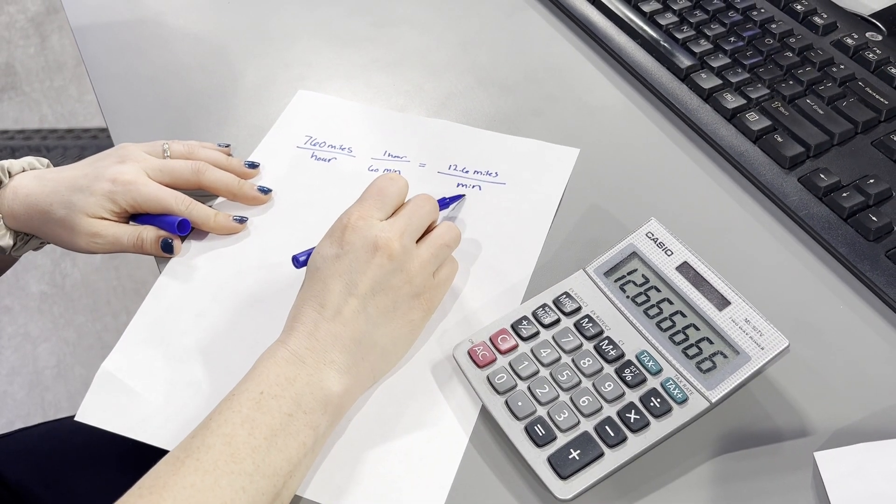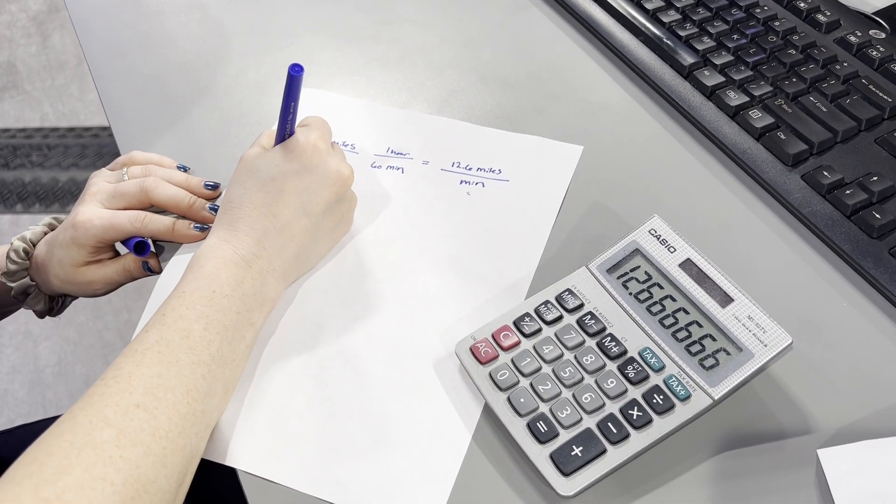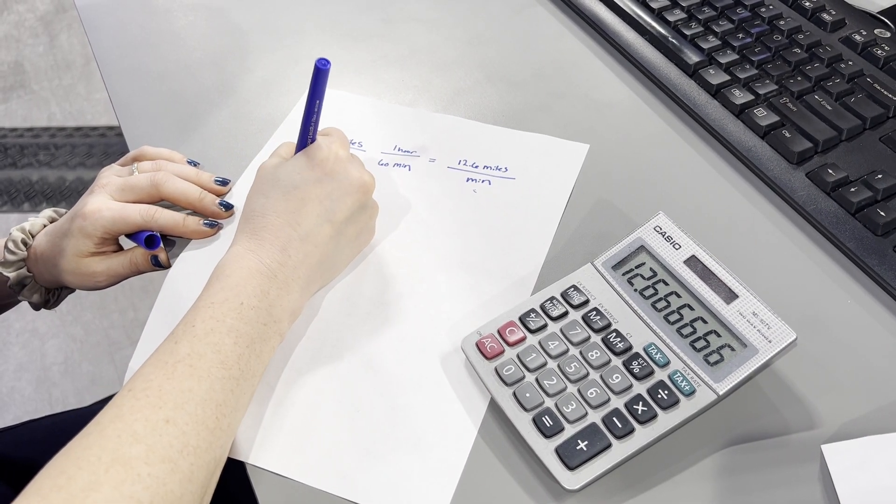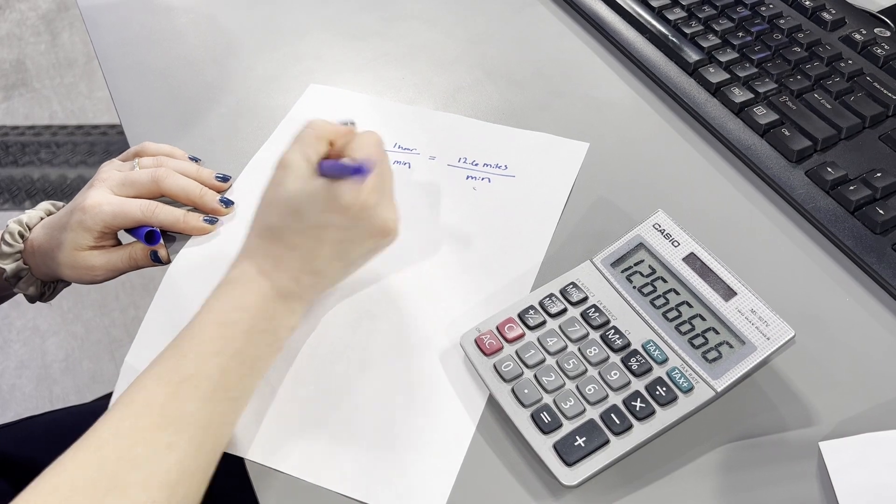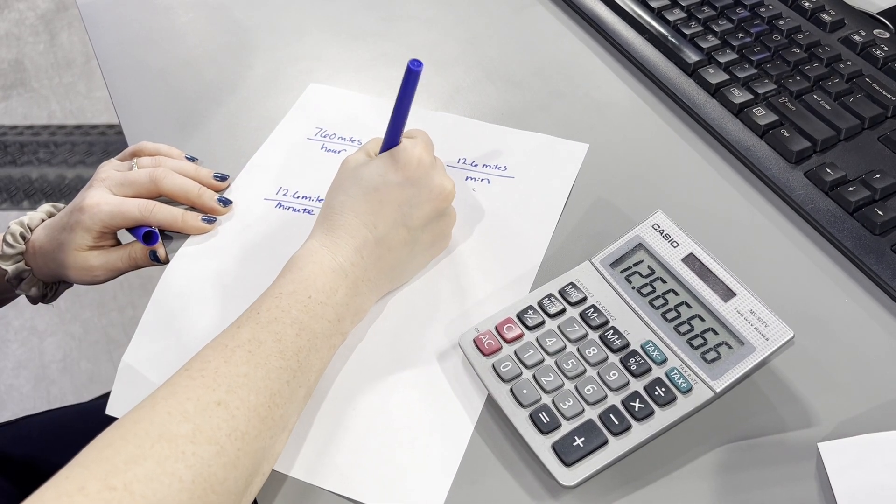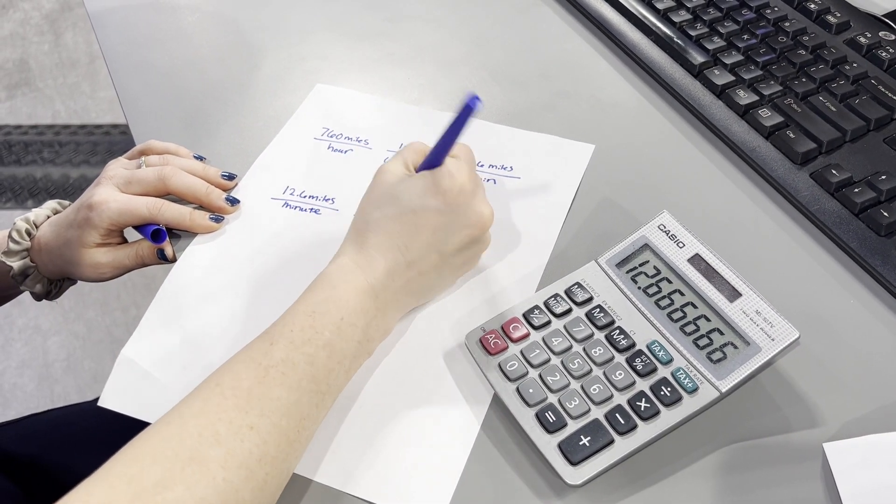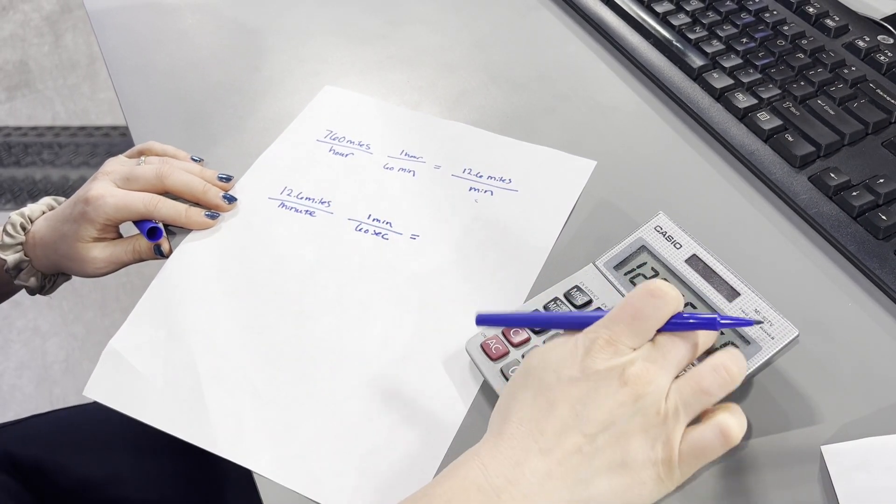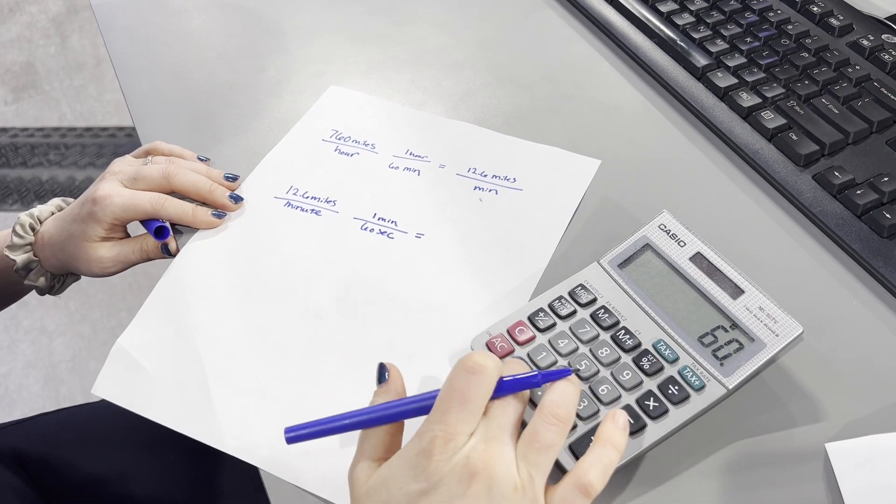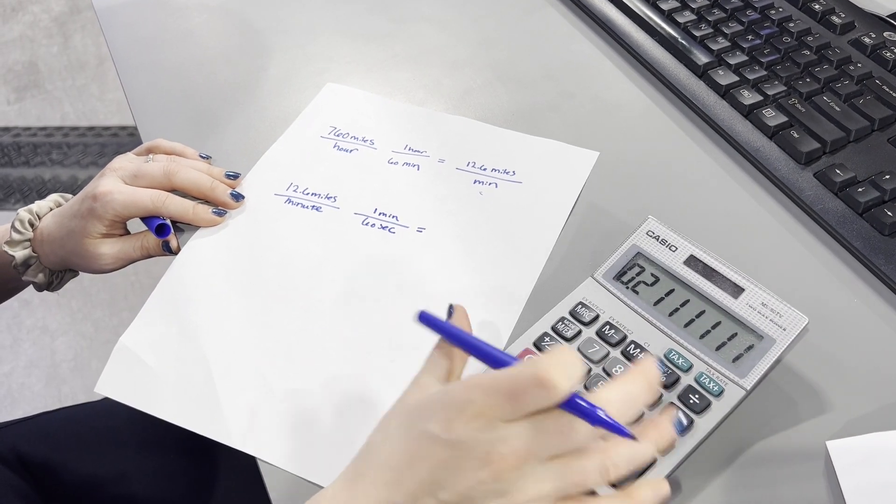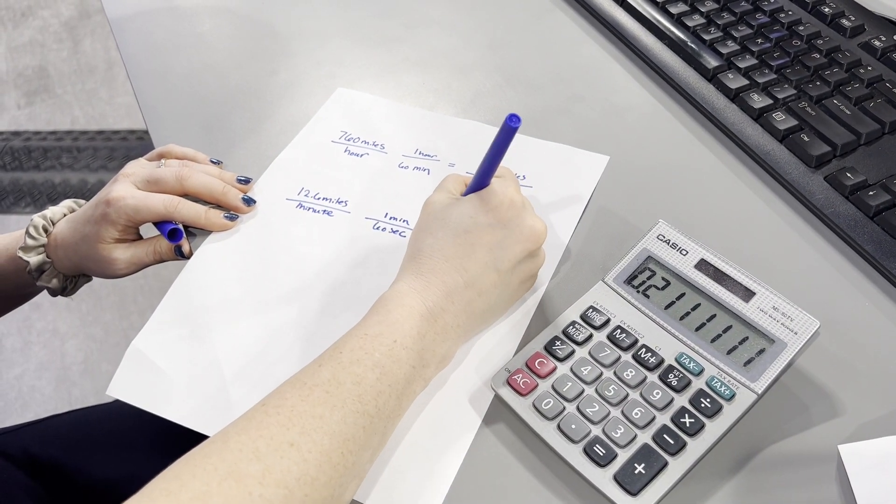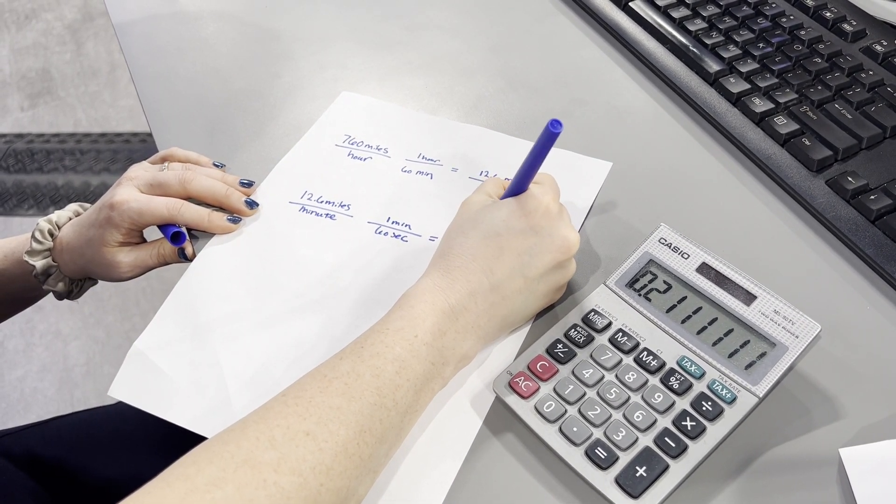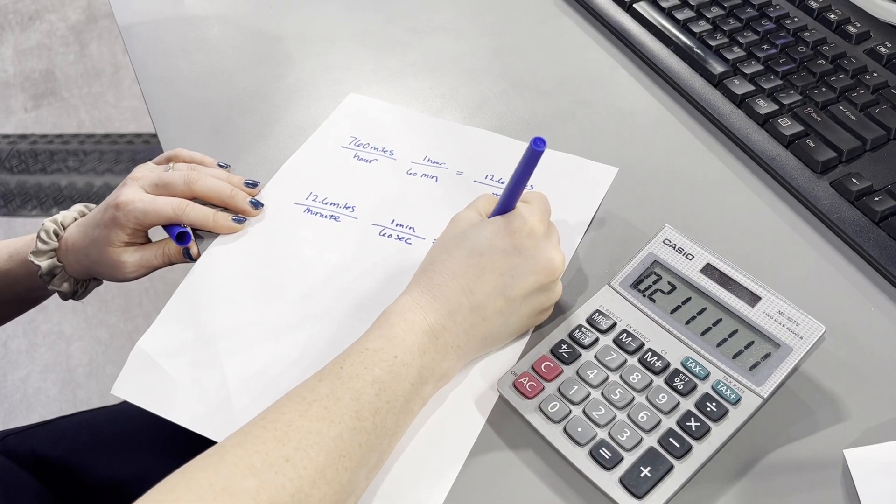Now, again, we want to get to seconds, right? So now we'll go with 12.6 miles per minute. To get to seconds, we know one minute has 60 seconds. So we just do the same thing. 12.6 divided by 60 gives us roughly one fifth. That means thunder travels one mile for every five seconds.